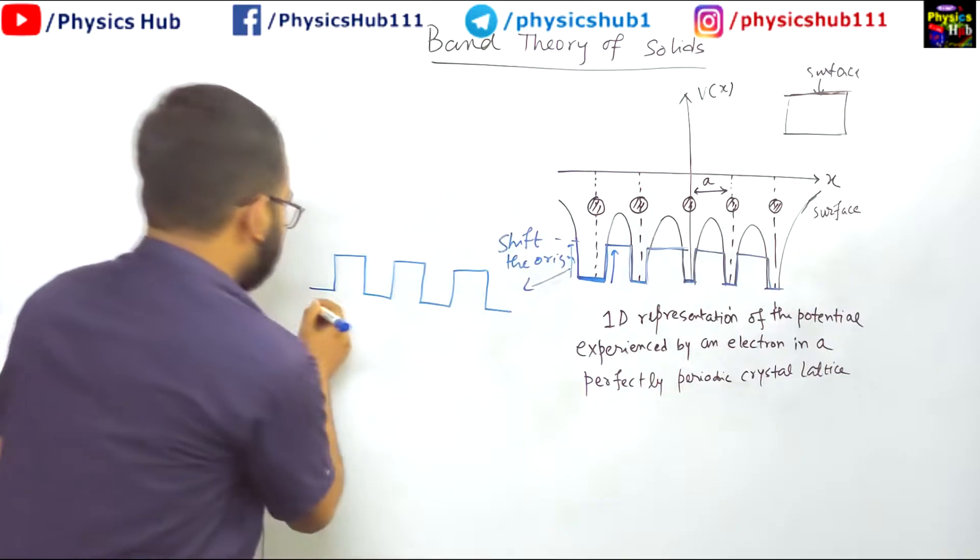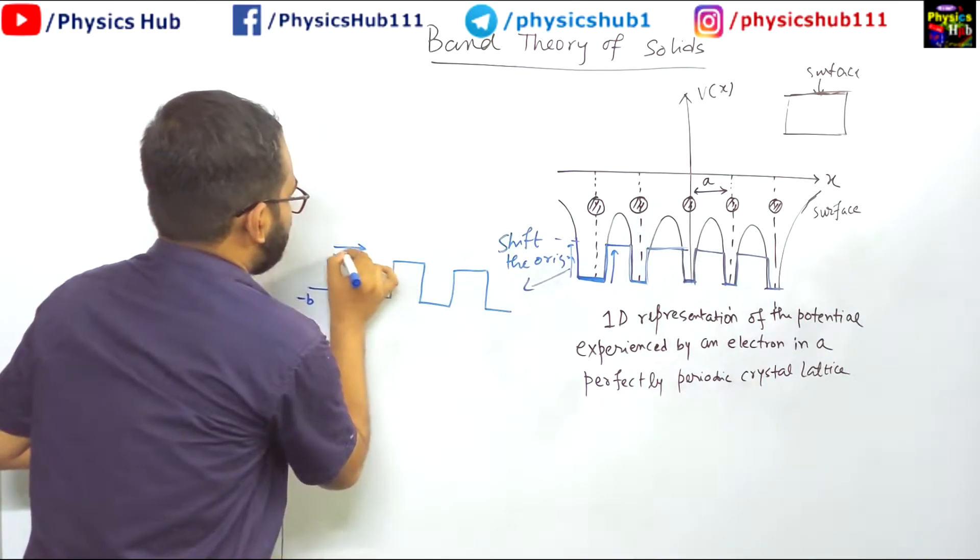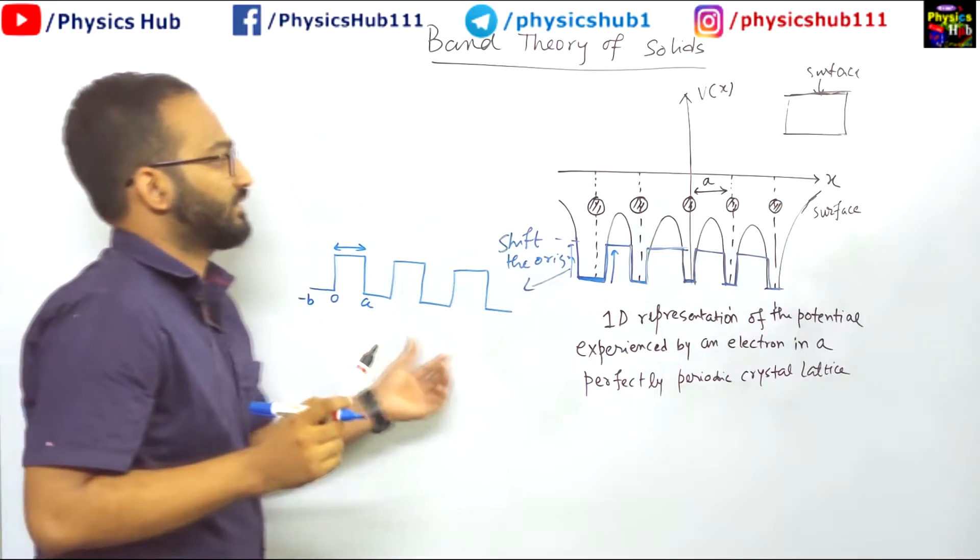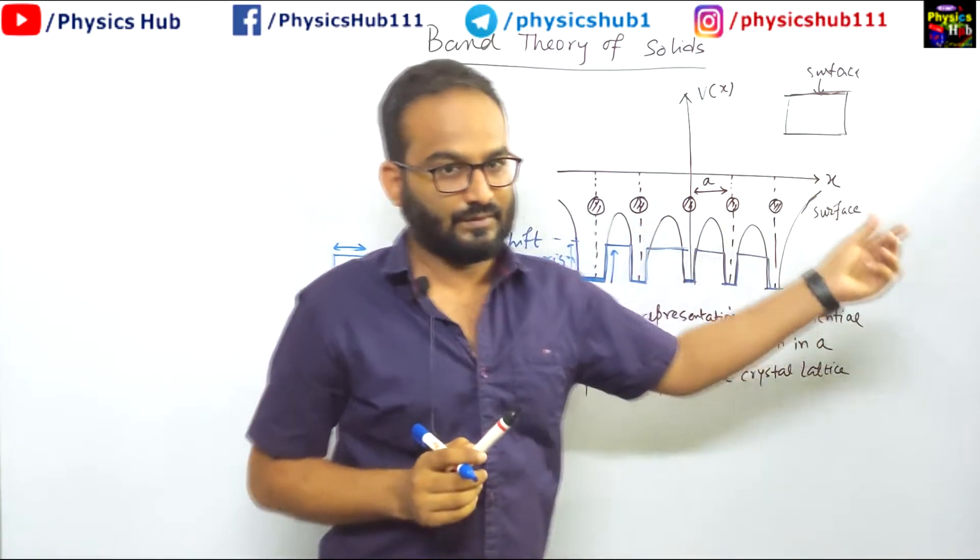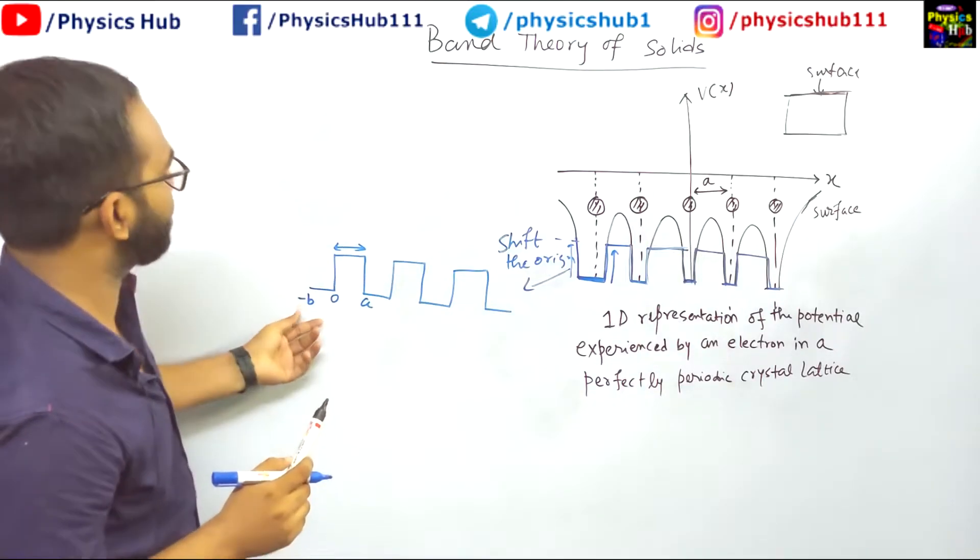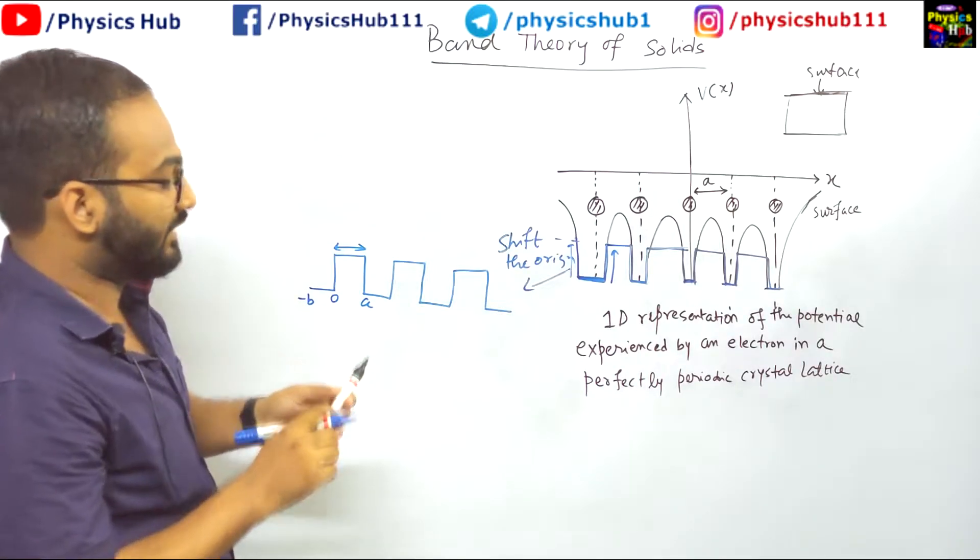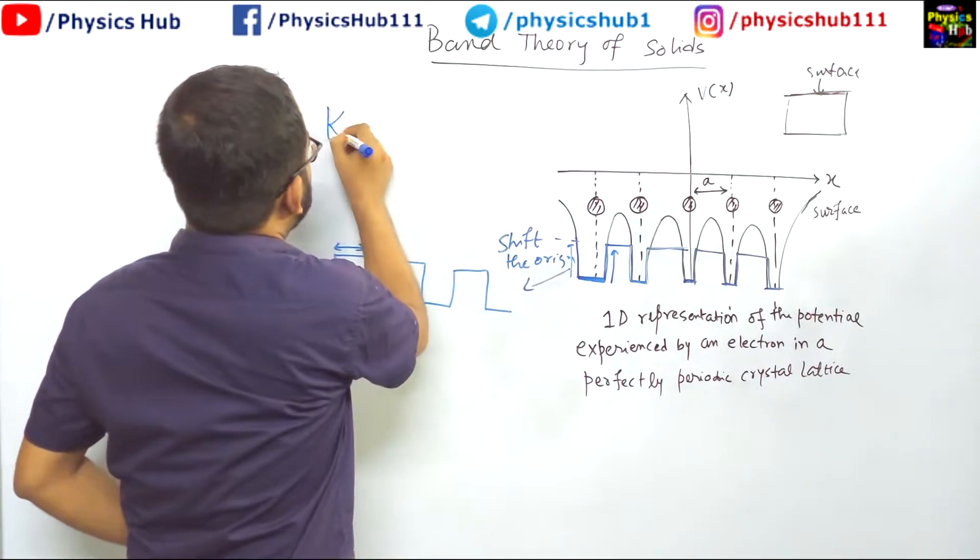And you can see it has some width. Let us say this is minus b, this is 0, this is a. So this is the lattice constant you have taken a. So here you can see the period is a plus b.